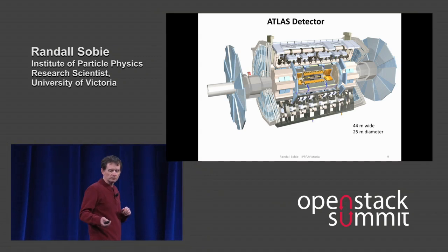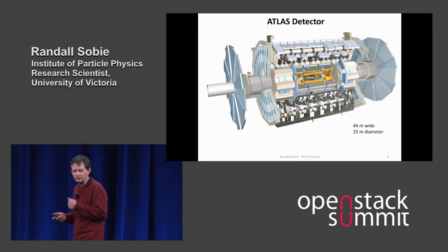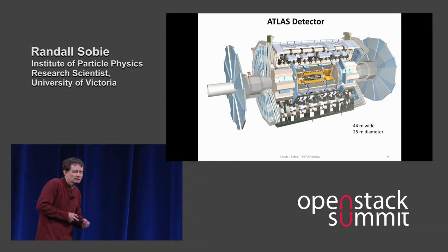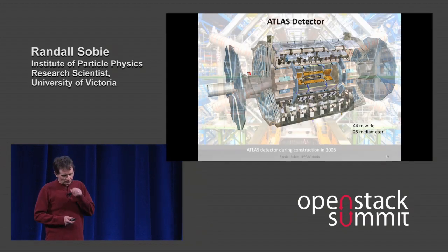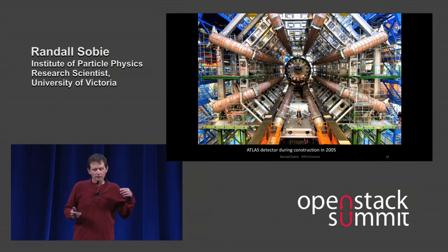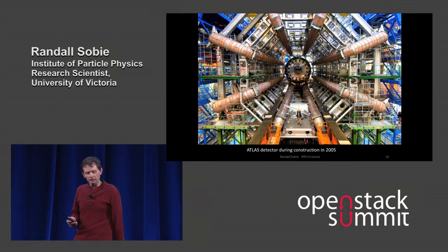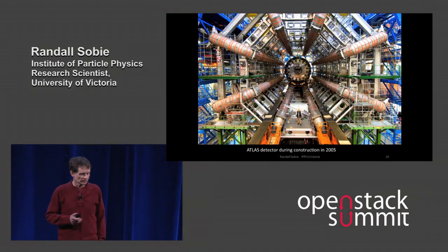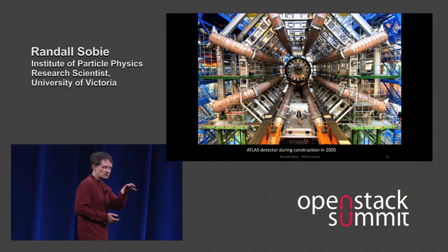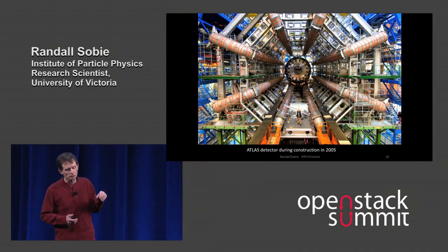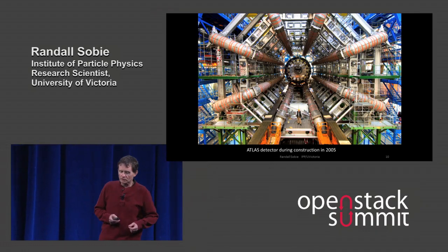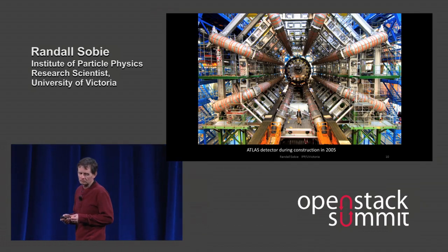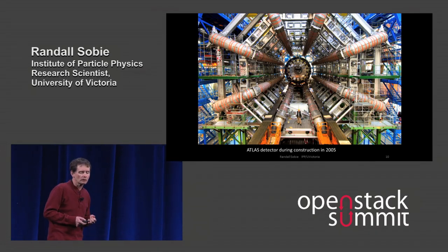You can see the scale with the people at the bottom — it's 44 meters across and 25 meters high. It's basically a camera. This is the picture looking down the proton beam line in 2005 as the Atlas detector was being constructed. The center is hollow and they're sliding the pieces in, which gives you a sense of the scale of the facilities. It took probably five to ten years to construct.